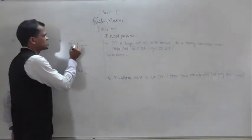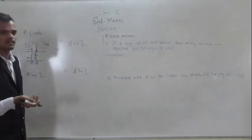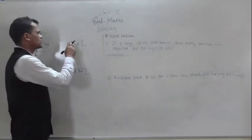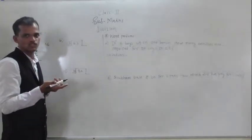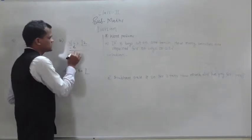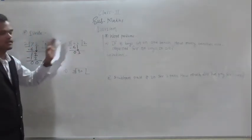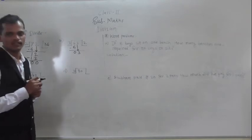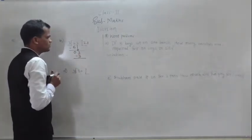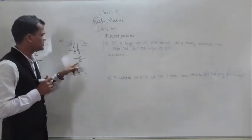Next example: 63 divided by 3. First digit is 6. Check whether 6 comes in the table of 3: 3 ones are 3, 3 twos are 6. Yes, 6 comes at the second position. So write 2 and subtract 6 from 6: 6 minus 6 is 0. Take 3 down. Now divide 3 by 3: 3 ones are 3, it comes at first position. Write 1 and subtract 3 from 3: 3 minus 3 is 0. So the quotient is 21 and the remainder is 0.